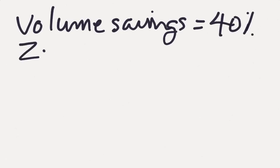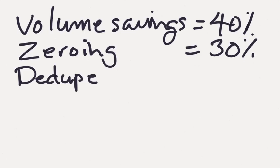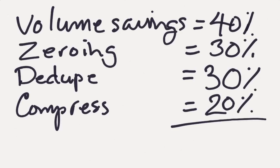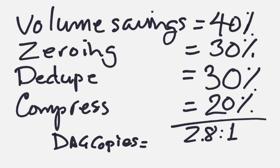Our volume savings is 40%. Because we can zero out pages, that saves us another 30%. Because we can deduplicate items in the Exchange mailboxes, we can save another 30%. And then we can compress things that aren't already duplicated by another 20%. This gives us a single copy efficiency of 2.8 to 1. And remember, if we duplicate the database, those copies come for free.